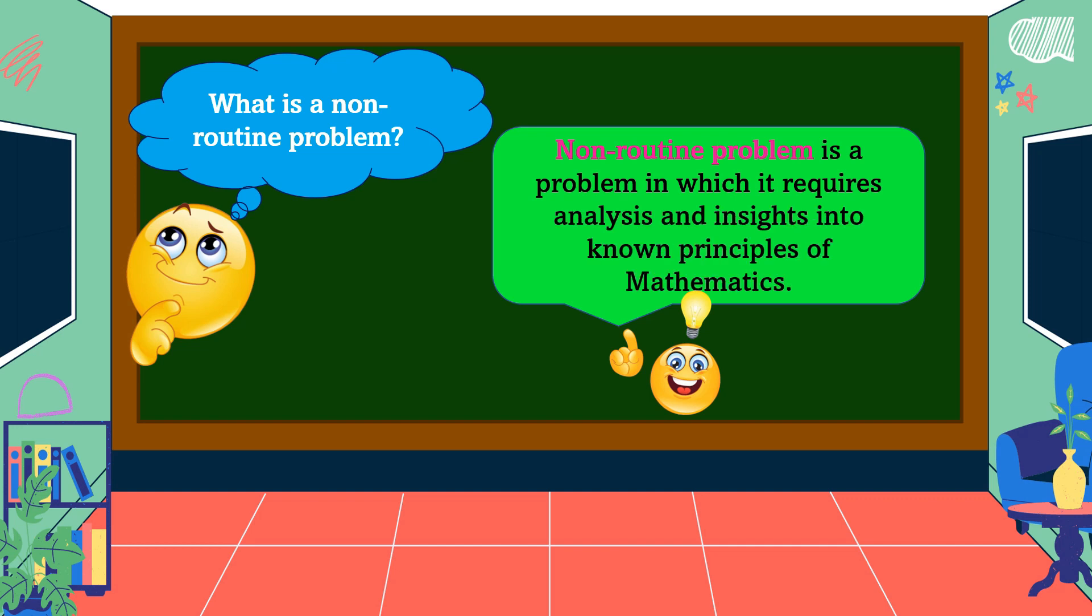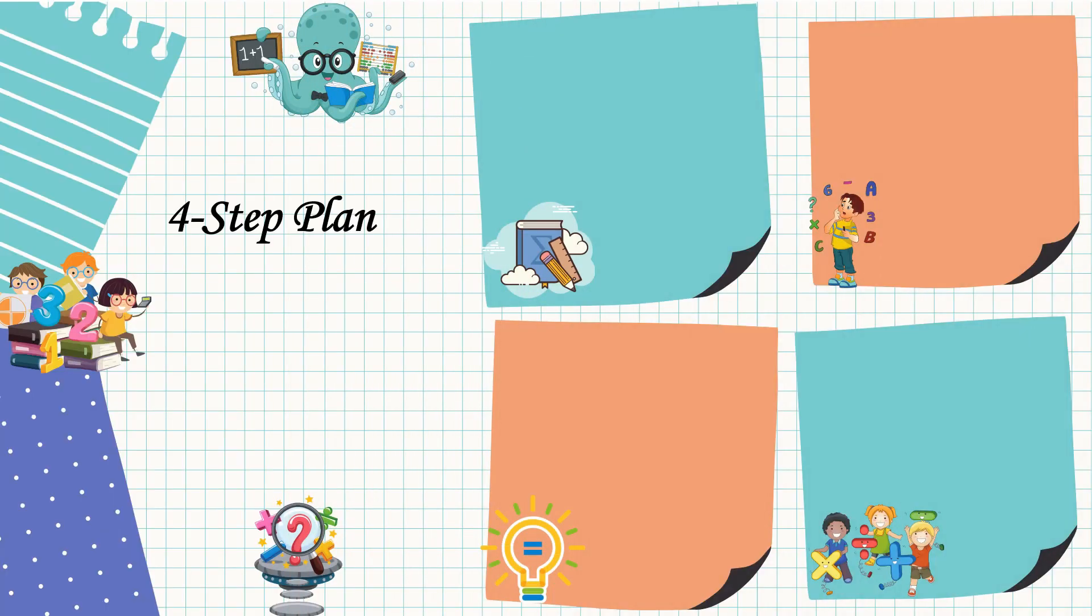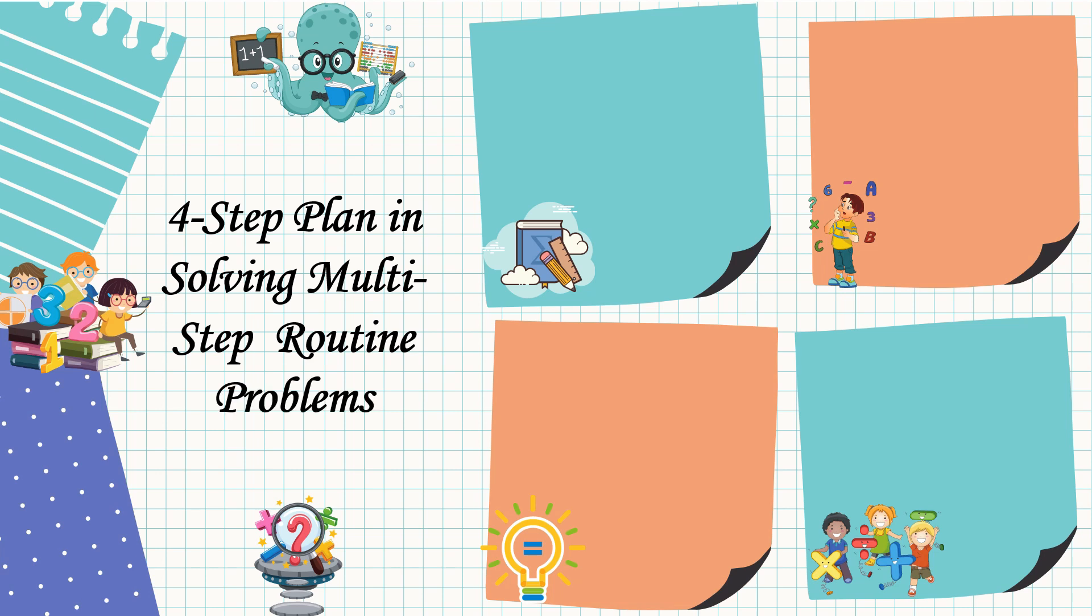The four-step plan in solving multi-step routine problems: First, we should understand the problem. In understanding, read the question twice or thrice, identify what is asked, and what is or are the given facts.